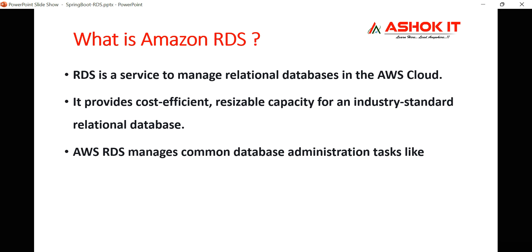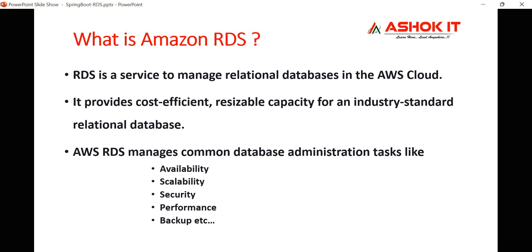Amazon RDS stands for Relational Database Service. The advantage of using RDS is that several administration tasks like availability, scalability, security, performance, and backup are taken care of by AWS. You just need to set up the database in the cloud and connect to it from your application. Most companies prefer cloud databases because the cloud provider manages the database and you pay on a pay-as-you-go basis.